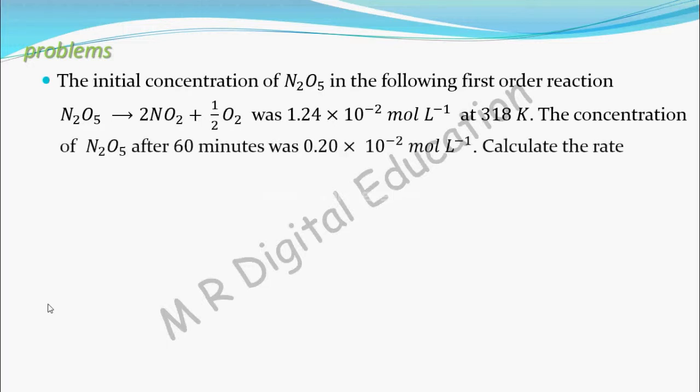The concentration of N2O5 after 60 minutes was 0.20 × 10^-2 mol per liter. Calculate the rate constant of the reaction at 318 Kelvin.